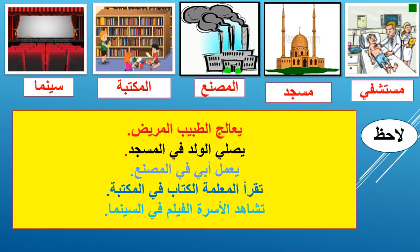Let's use the previous verbs and make our own sentences. Yu'alij al-tabib al-marid — the doctor cures the patient. Yusalli al-walad fi al-masjid — the boy prays in the mosque. Ya'mal abi fi al-masna' — my father works in the factory. Taqra al-mu'allima al-kitab fi al-maktaba — the teacher reads the book in the library. Tushahid al-usra al-film fi al-sinima — the family watches the movie in the cinema.